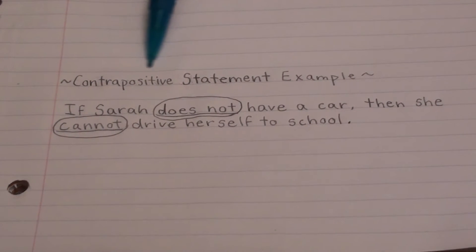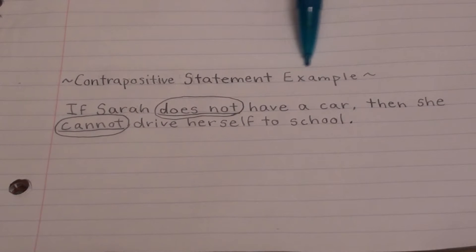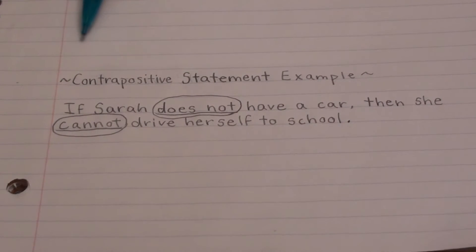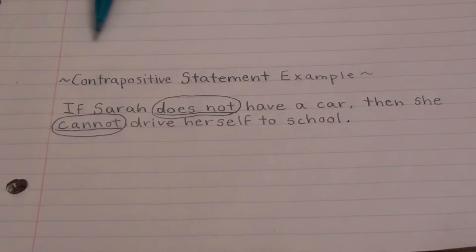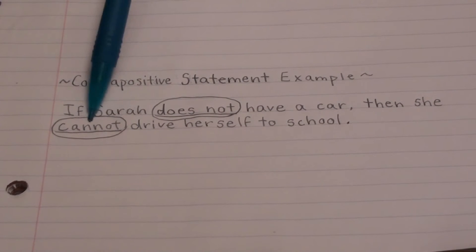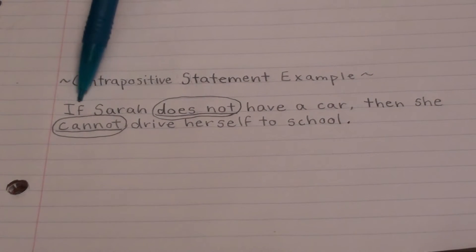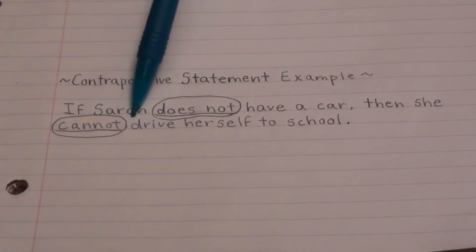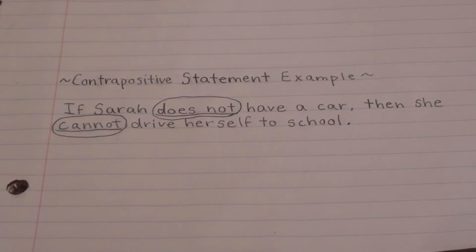A contrapositive statement is made by combining the ideas of inverse and converse statements. Therefore, you negate the statement and flip the hypothesis and conclusion around in the sentence.